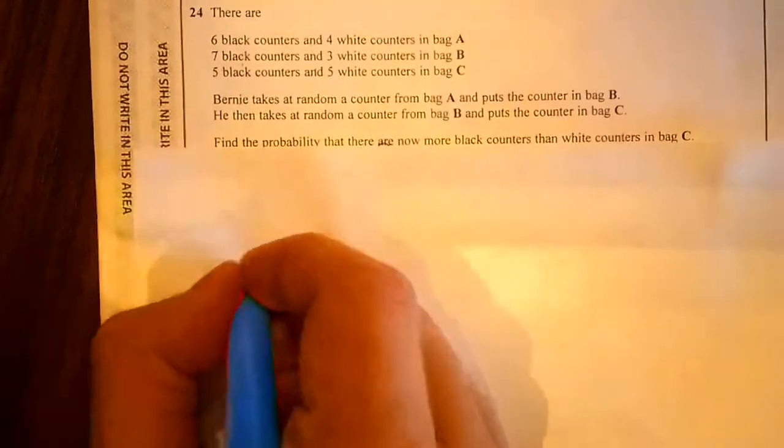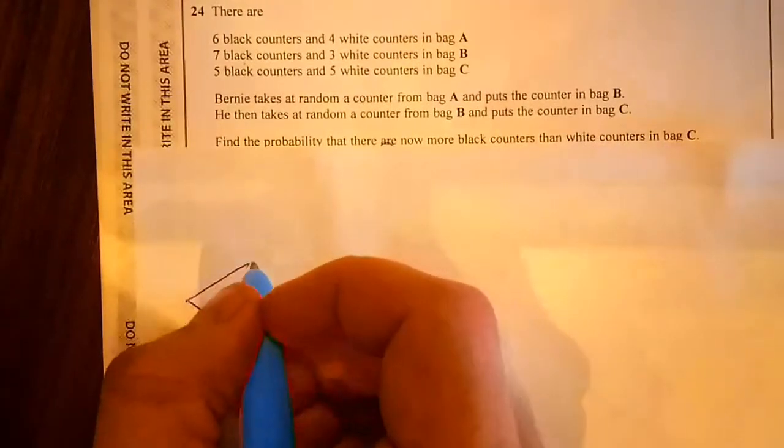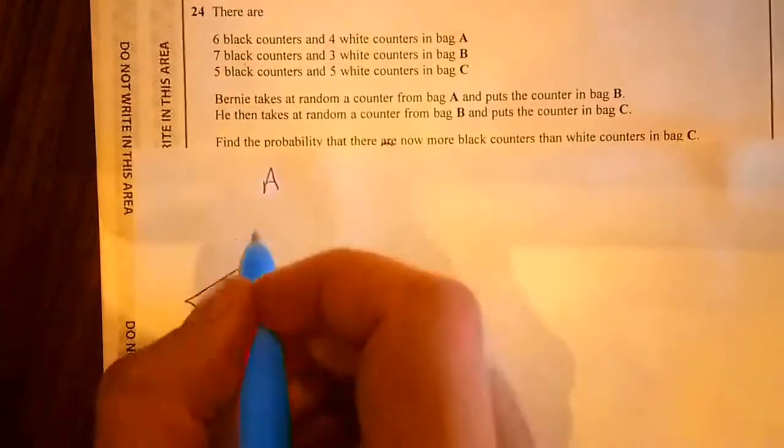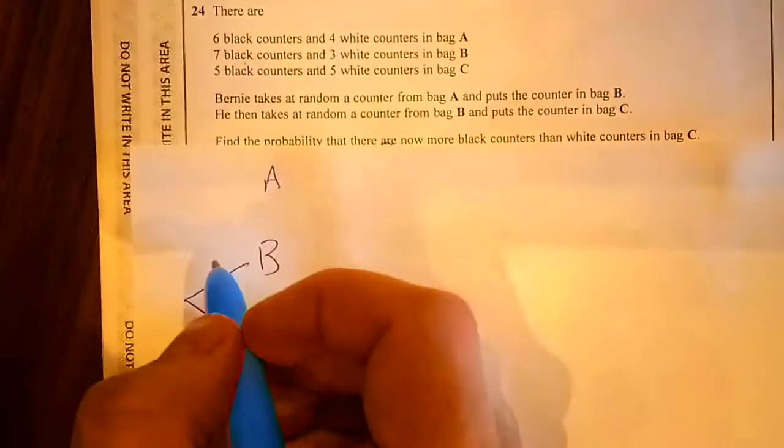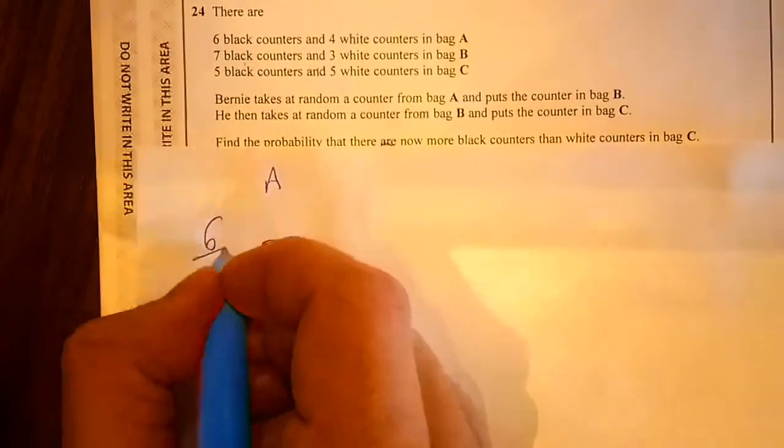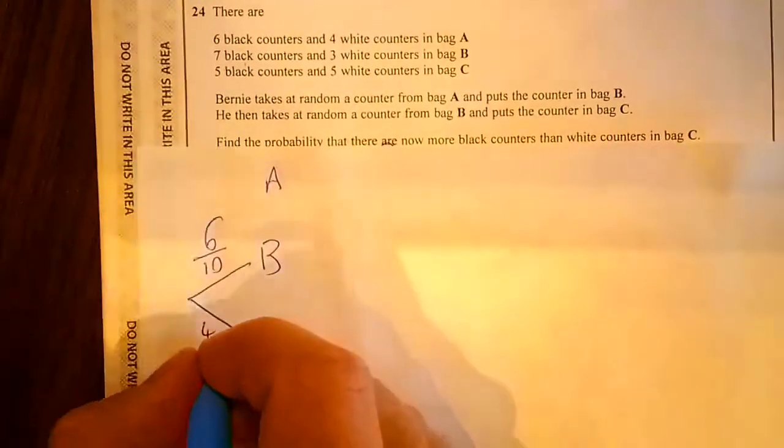Now this is the easiest way to treat it as a diagram. If we think of this as bag A, I've got 2 options which are black and white. The chances of it being black will be 6 out of 10 and white will be 4 out of 10.